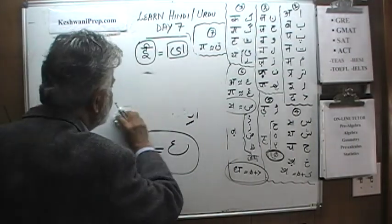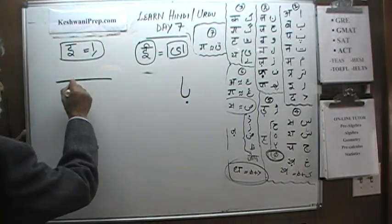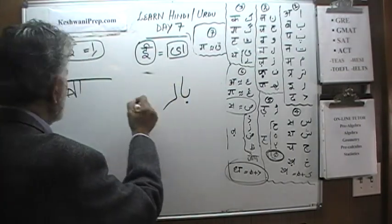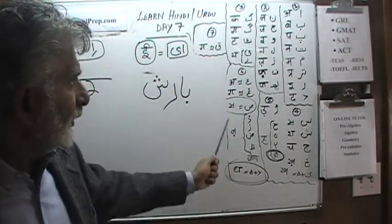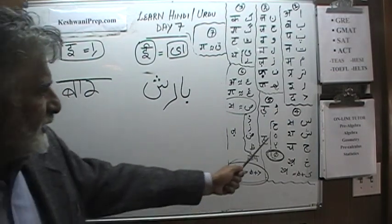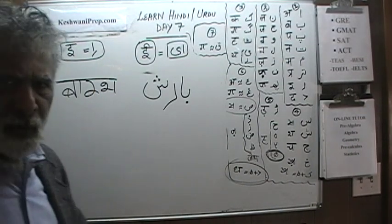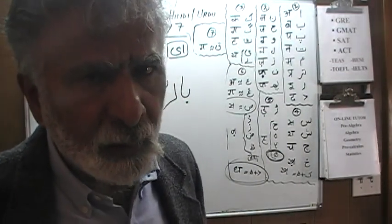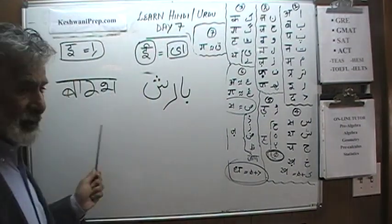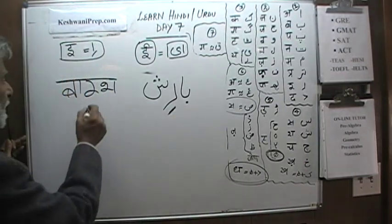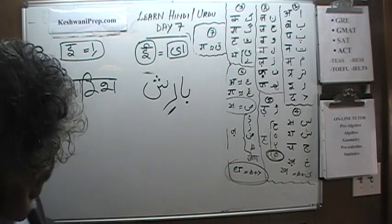Let's write a word with Choti Iki Matra. Writing Ba, Ra, Sheen — Sheen has three dots. Without a matra it reads 'Barash,' which is not a word. We are missing Choti Iki Matra. We need a Zer underneath Ba. Adding the Zer, the word becomes Barish — meaning rain.